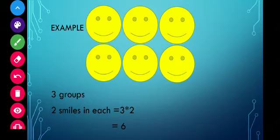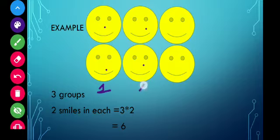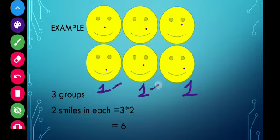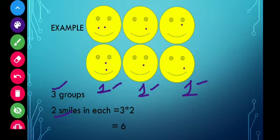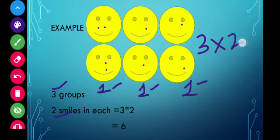Now we have smileys on screen. Using the same multiplication in groups method, we will first form the number of groups and then multiply them, but this time we will form groups in a different way. Counting: one group of two smileys, another group of two smileys, another group of two smileys. We have three groups with two smileys in each group. So three multiplied by two equals six.